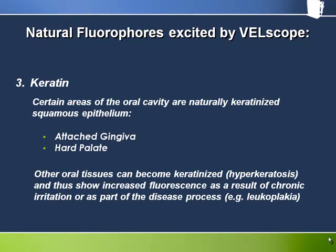Keratin is a structural protein that fluoresces when excited by blue light. Certain areas of the oral cavity are naturally keratinised squamous epithelium — for example, the attached gingiva and hard palate. Other oral tissues can become keratinised, or hyperkeratotic, and thus show increased fluorescence as a result of chronic irritation or as part of the disease process, for example in leukoplakia. All other things being equal, this keratin layer, if thick enough, can show up quite brightly under the Velscope.